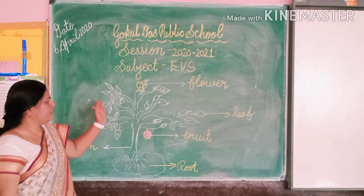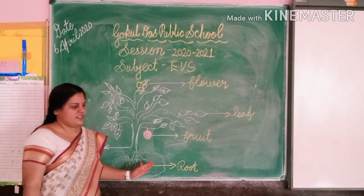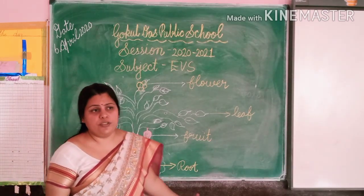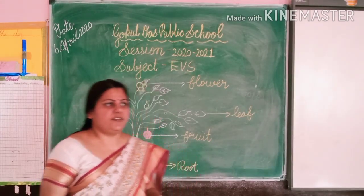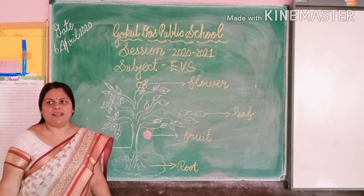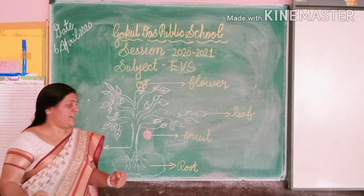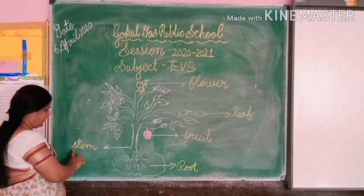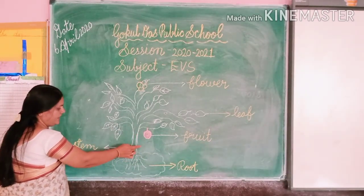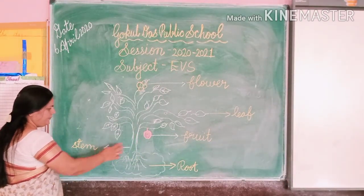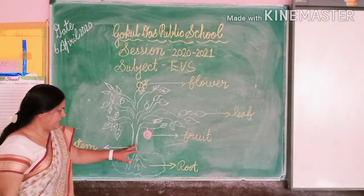Today we will learn about the plant. When you go out, you can see there are many trees and plants. Trees are the big ones — they have thick and strong stems. I will tell you what a stem is. This is the stem of a plant. I made a structure of a plant — this thin part is the stem.